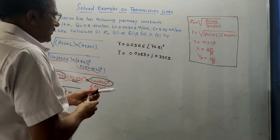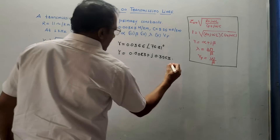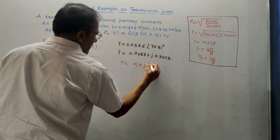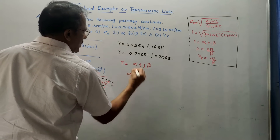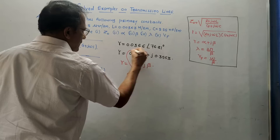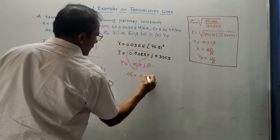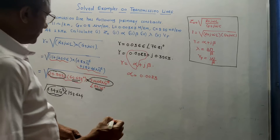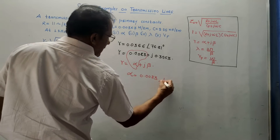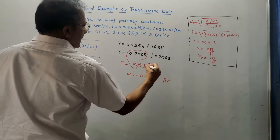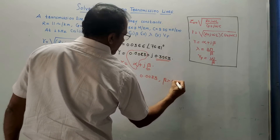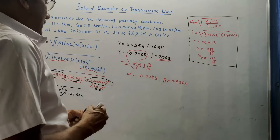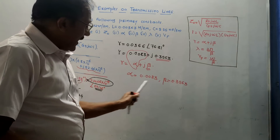We have the standard formula: γ = α + jβ. Directly comparing, alpha is the real term, so α = 0.0083 (attenuation constant). And beta is the imaginary term, so β = 0.3563 (phase shift).